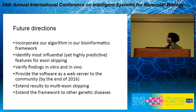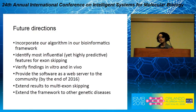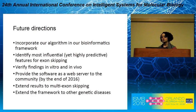We are planning to incorporate our results with all known data on exon skipping for Duchenne muscular dystrophy to identify the most influential — not just the most correlated, but the most predictive — variables for exon skipping. We want to provide the community with a predictive tool, and we are going to test our results in vitro and in vivo. We are aiming to have the web server ready for the community to use by the end of 2016. Thank you, everyone.